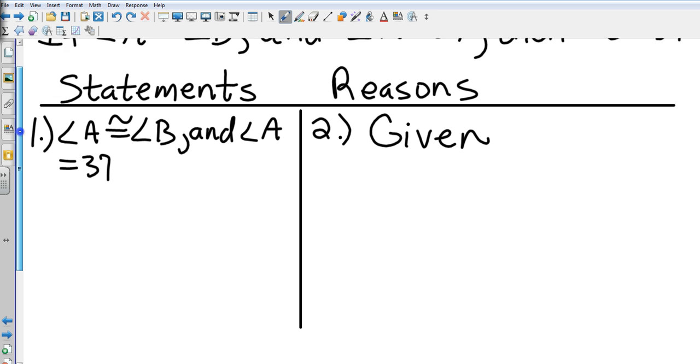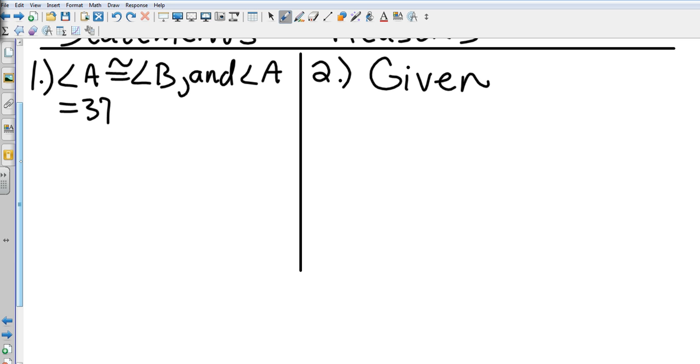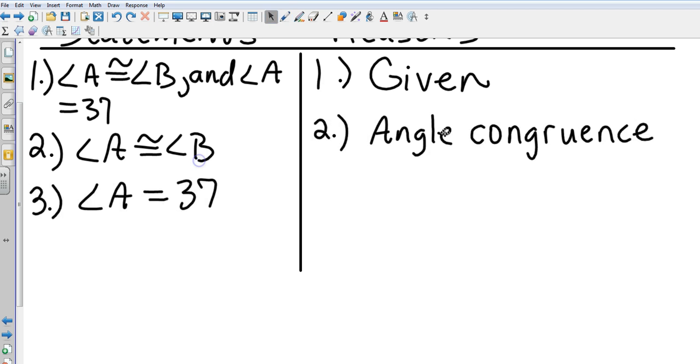Now I need to dissect the given statement. I'm trying to find out what angle B is, so I need to restate a relationship of A to B. The second step is angle A is congruent to angle B because of angle congruence. In the third step, we know that because they are equal and A equals 37, angle B is congruent to 37. We do that through the law of substitution.